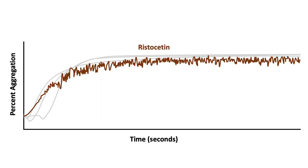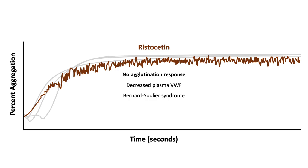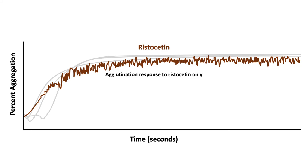For a positive control, we use ristocetin. It is not an agonist promoting aggregation; rather, ristocetin is necessary for von Willebrand factor mediated platelet agglutination. If there is no agglutination response to ristocetin, it implies either decreased plasma von Willebrand factor or Bernard-Soulier syndrome, which is due to a defect in the platelet receptor for von Willebrand factor, GP1B95. If there is agglutination response to ristocetin only, with no aggregation response to other agonists, it indicates a defect in the GP2B3A platelet receptor, as can occur in the congenital disorder Glanzmann's thrombasthenia.